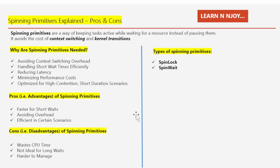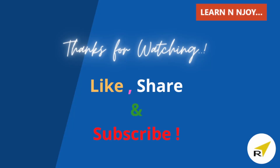That brings me to the end of today's session. To sum up, we explored what spinning primitives are and why they are crucial in parallel programming. We discussed their pros and cons and provided a brief overview of specific types such as SpinLock and SpinWait. I will be covering these two in more detail in upcoming videos, so stay tuned. If you liked this video, hit the like button, share it with your friends and colleagues, and subscribe to my channel if you haven't already. Thanks for watching!